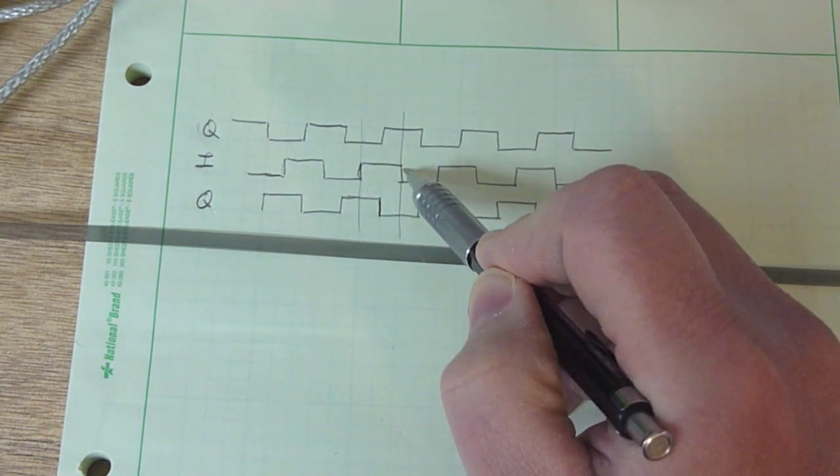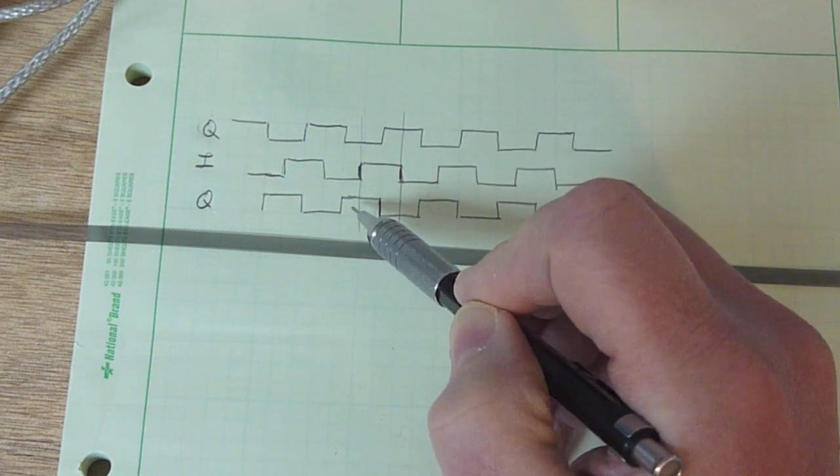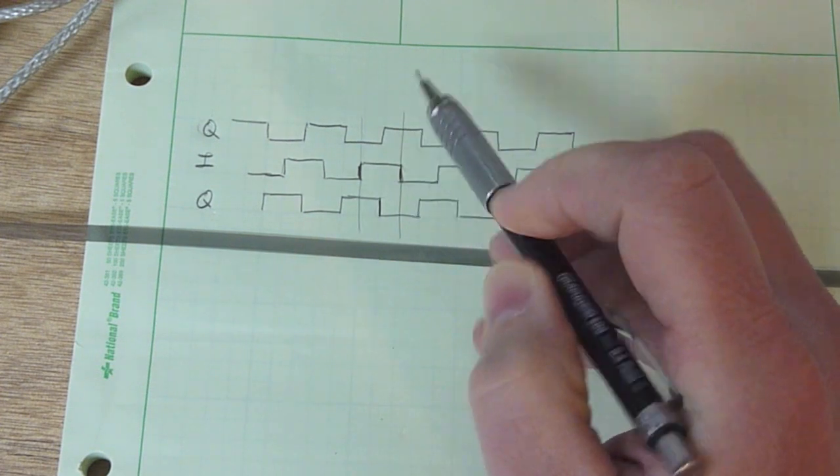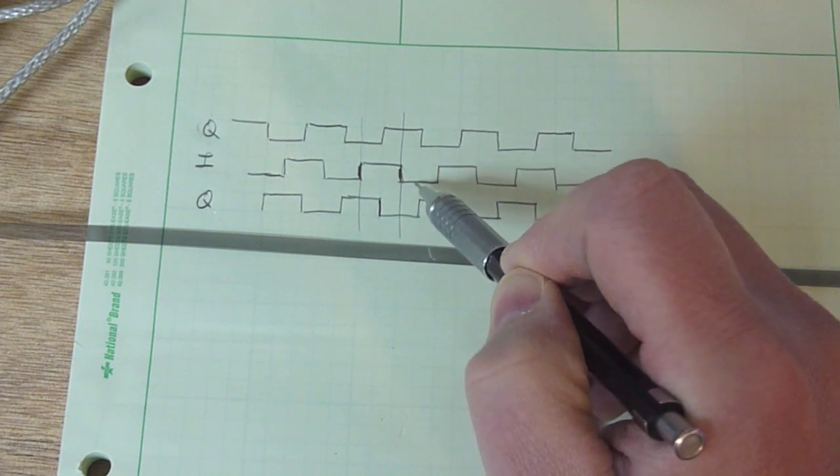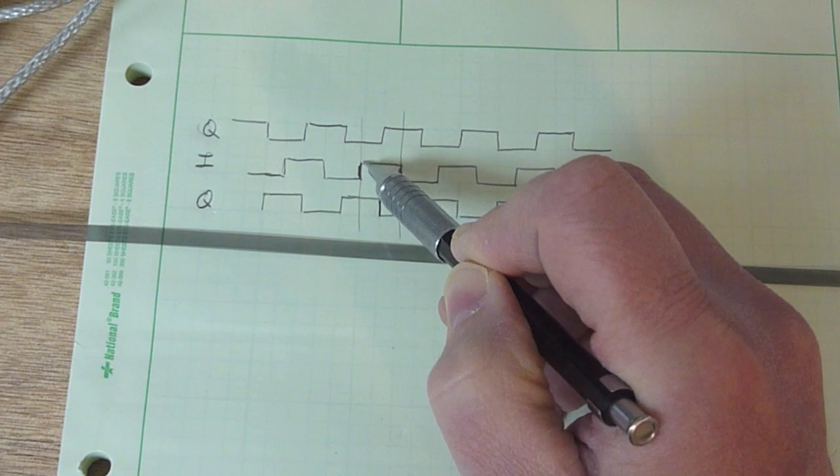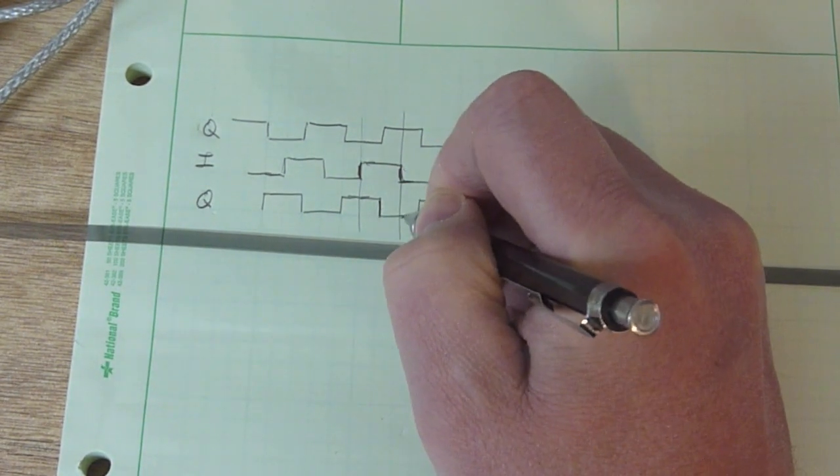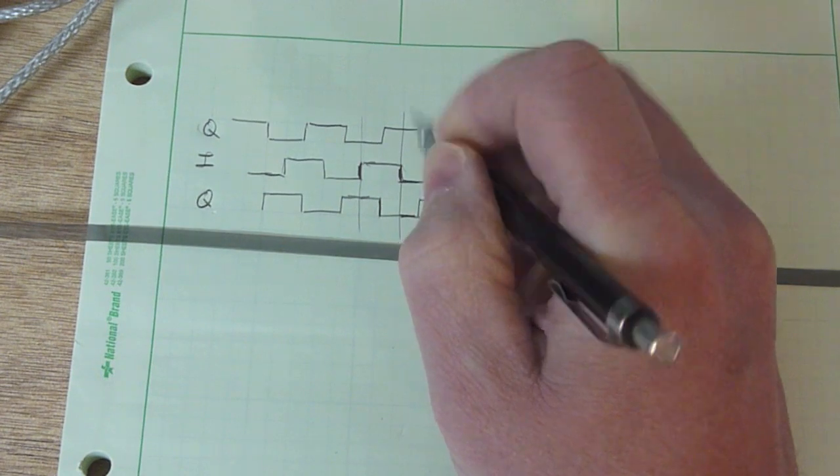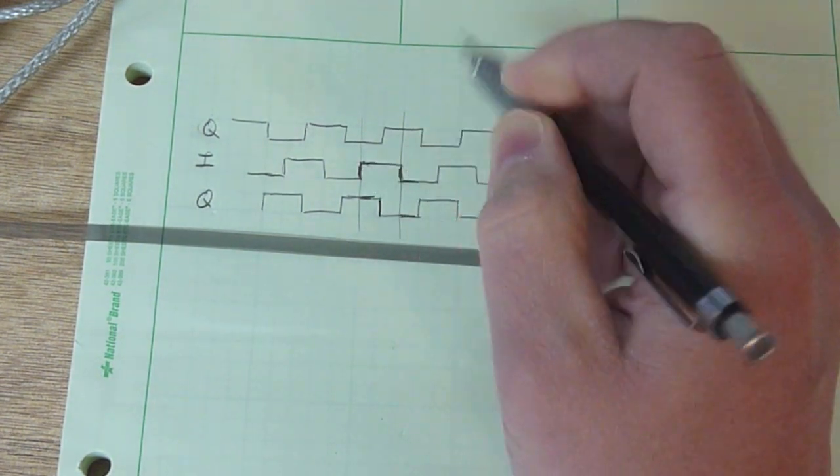So we're going to interrupt every time there's a change on the I line. And you'll notice that when the strip is going in one direction, every time there's an edge on the I line, the level of the I and the Q are the same. So here they're high and here they're low. So for direction A, let's say, you'll find that I and Q are equal on an edge change on the I line.